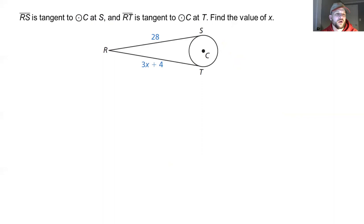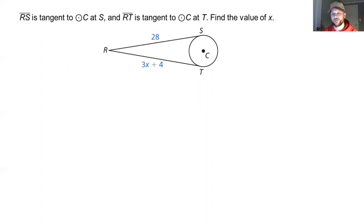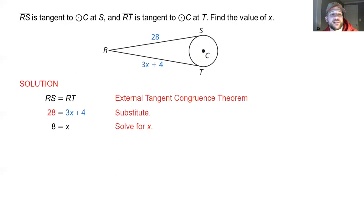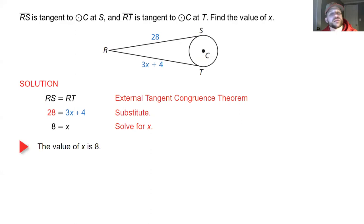In the final example, RS is tangent to circle C at point S and RT is tangent to circle C at point T. Both tangent lines are congruent by the external tangent congruence theorem, so we set 28 equal to 3X plus 4. Subtracting 4 from both sides gives 24, then dividing by 3 gives X equals 8.